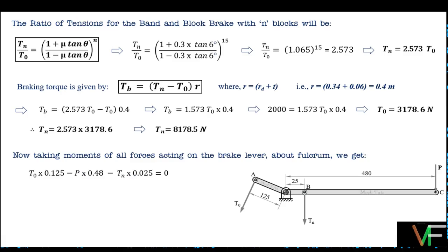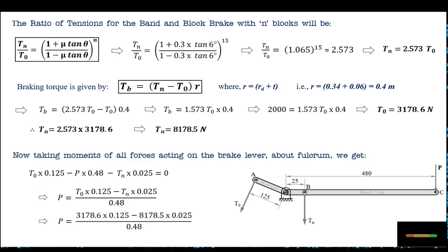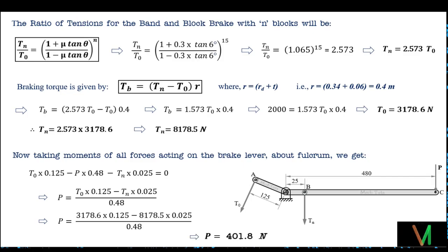Taking moments of all forces on the brake lever about the fulcrum: T0 × 0.125 - P × 0.48 - Tn × 0.025 = 0. Rearranging, P = (T0 × 0.125 - Tn × 0.025) / 0.48. Substituting T0 = 3178.6 N and Tn = 8178.5 N gives P = (3178.6 × 0.125 - 8178.5 × 0.025) / 0.48 = 401.8 N. This is the least force to be applied on the lever.